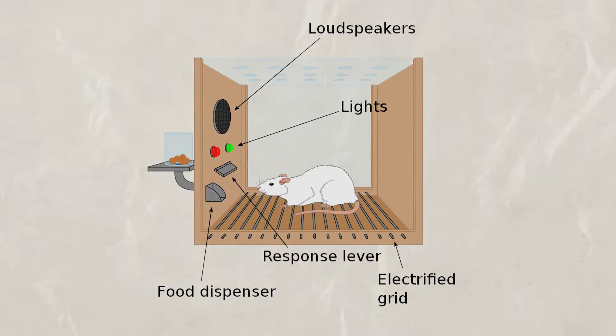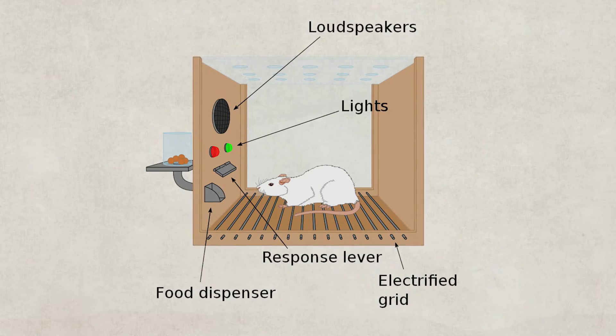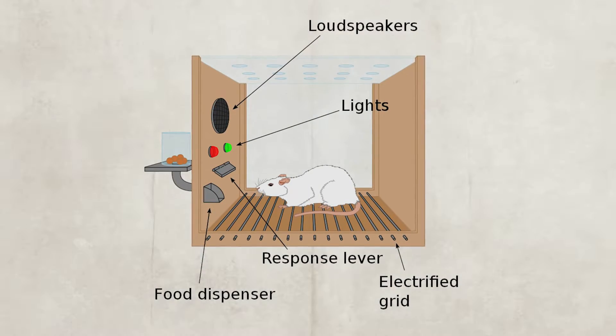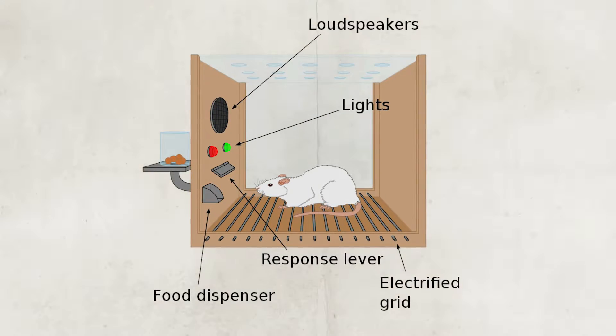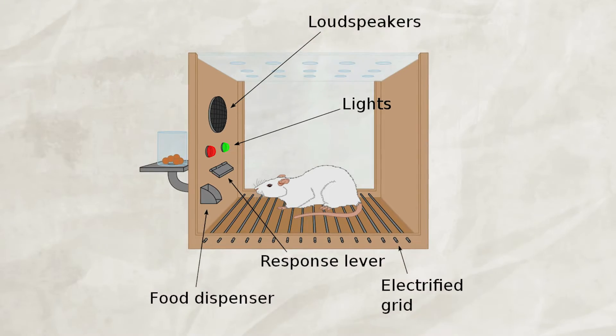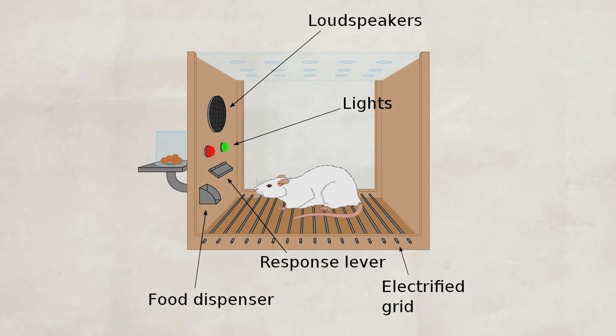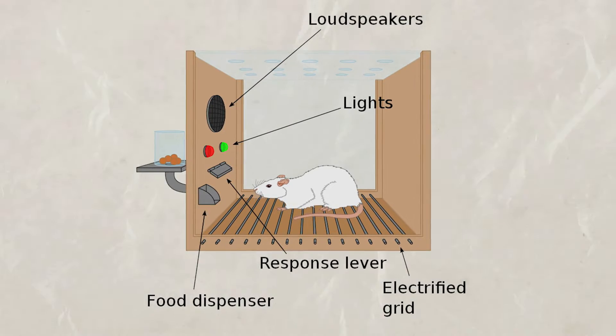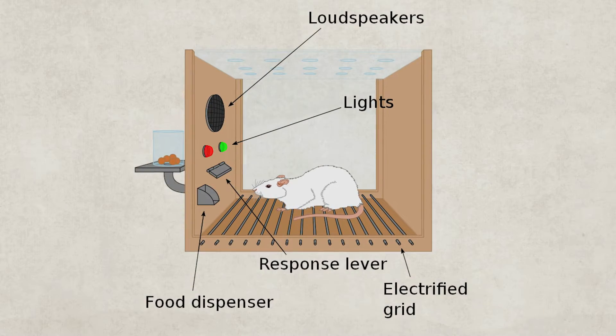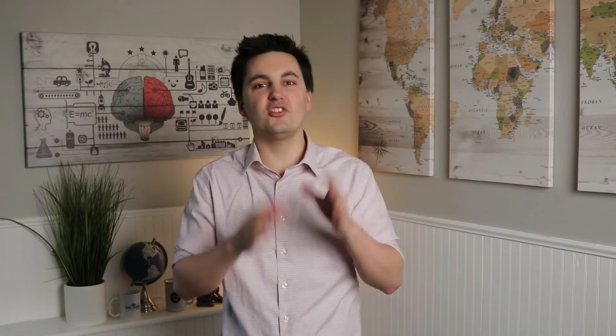One of Skinner's most famous studies was the Skinner box, also known as the operant chamber. Skinner created a box that had a speaker, a light, a food dispenser, a spigot for water, and a lever inside it. Skinner would put an animal in the box to teach them to push down on the bar to get food.